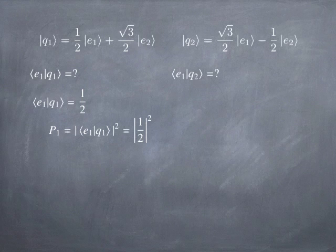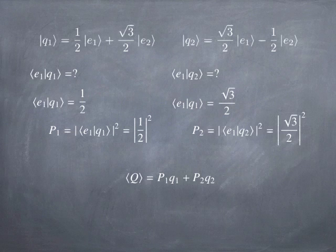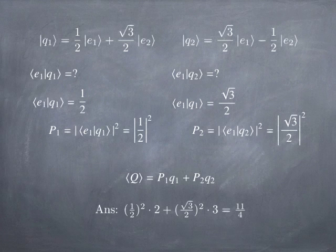Similarly, the amplitude of being in state E1 given that you're in state q2 is √(3)/2, which means it has a probability of three-fourths. The probability of being in state E1 given q1 is one-fourth, and given q2 is three-fourths, and the probability of being in one or the other must sum to one. To calculate the expectation value, you take the probability of finding the system in state q1 times eigenvalue q1, plus the probability of being in state q2 times eigenvalue q2. Plugging all that in gives an answer of 11/4.